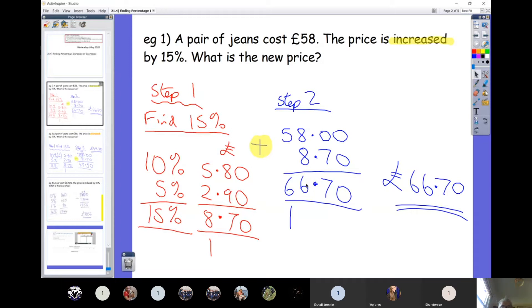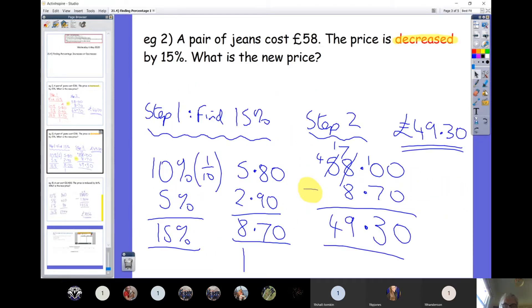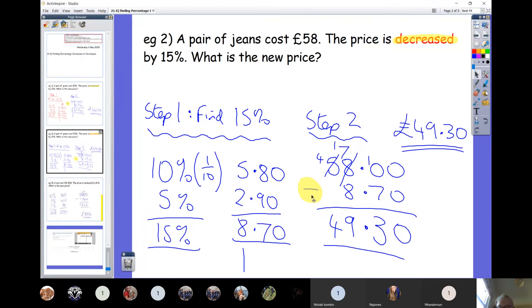Example number two. Very similar question. A pair of jeans costs £58. The price is decreased by 15%. Well, it's the same numbers I used as example one, so the 15% is still £8.70. But of course, the price is now being decreased, so you take your starting price of £58 and you now take away £8.70. £58 take away £8.70 is £49.30.